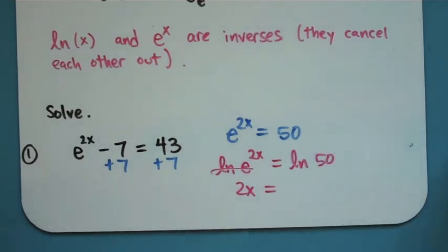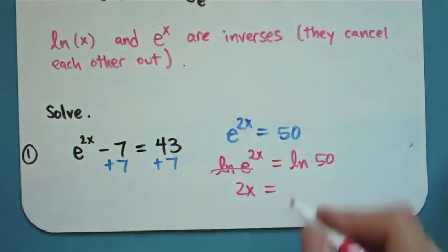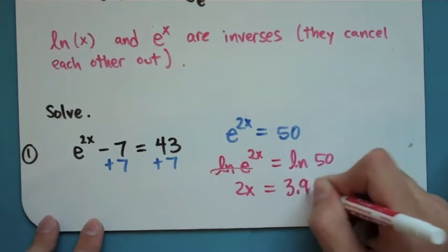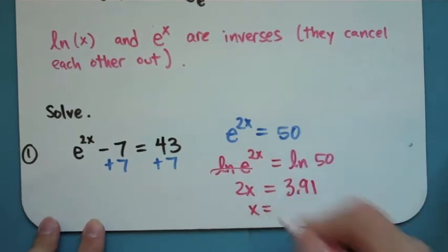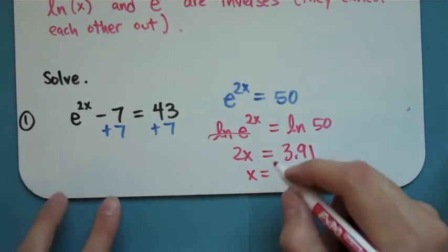And the natural log of 50 is just something I can type in a calculator. When I do that, I get 3.91 roughly. So since I have a 2x there, I need to divide by 2. And I arrive at the solution 1.956 roughly.